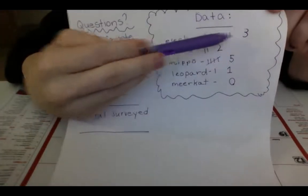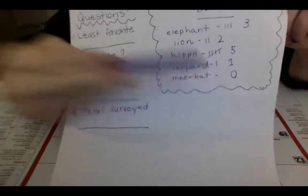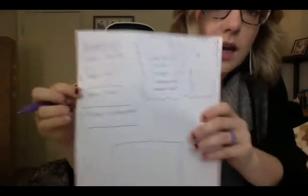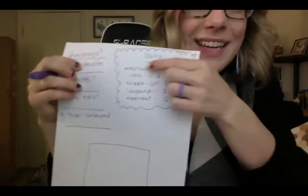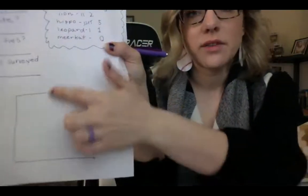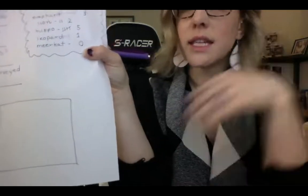Now that I have my values for each set of animals, I can make my bar graph. I'm going to draw a square and divide it — I have five animals, so I'll make five sections. I prefer to look at bar graphs up and down, so we're going to do an up-and-down bar graph unlike the example in the video. I'll draw five columns — one, two, three, four, five.